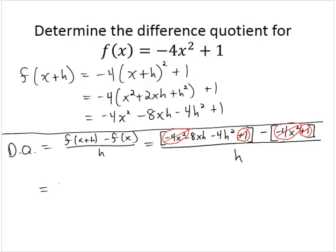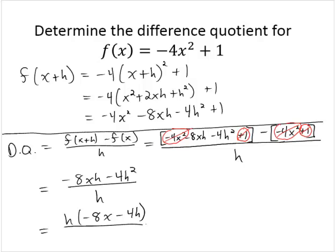So the difference quotient simplifies to (-8xh - 4h²) / h. Notice there's a common factor of h in the numerator: h(-8x - 4h) / h. Removing the common factor of h from numerator and denominator, the difference quotient for this function is equal to -8x - 4h.